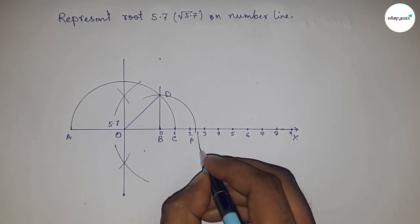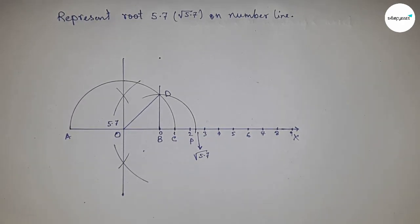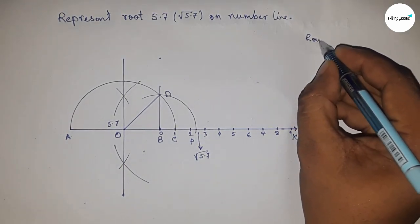This is the representation of root 5.7 on the number line. Now let's discuss the back calculation.